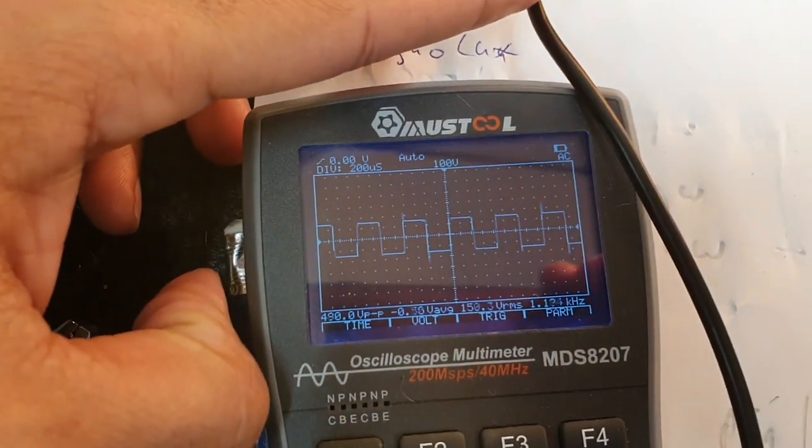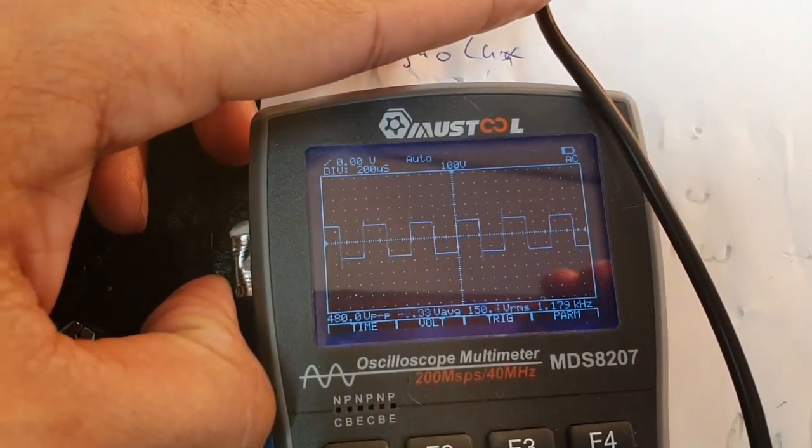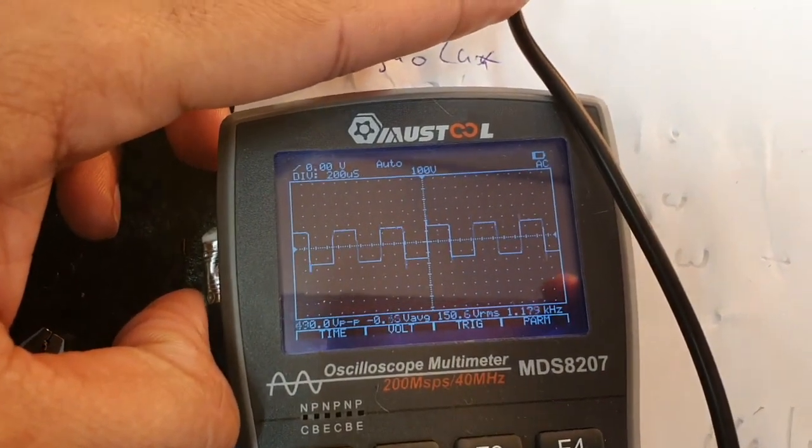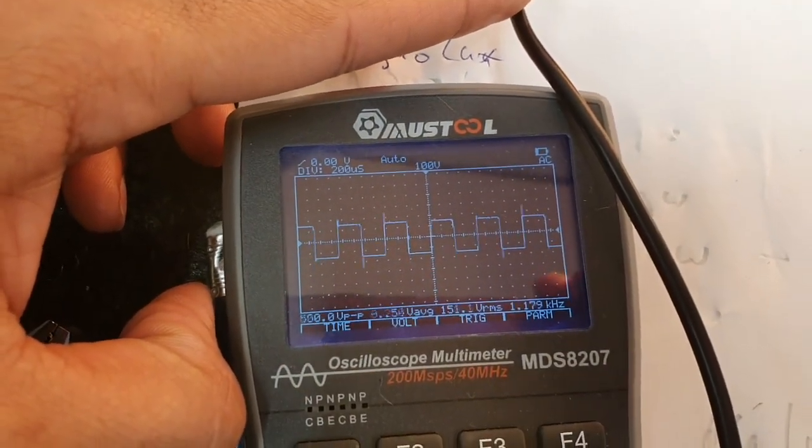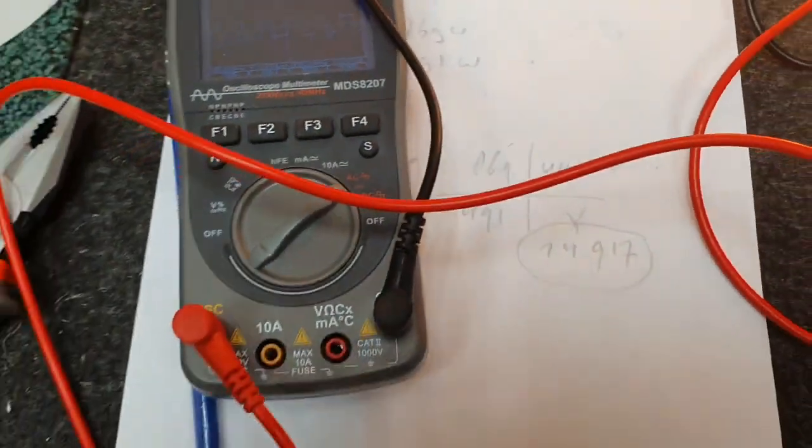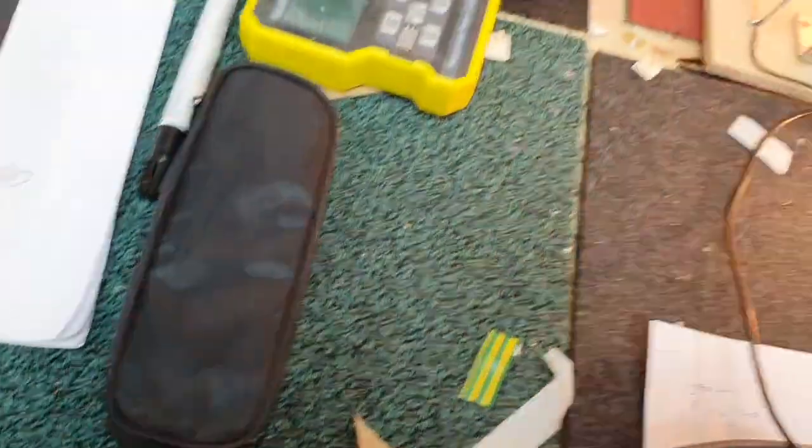You see a modified sine wave actually. Interesting. At 590 volts. Let's grab the lux meter.